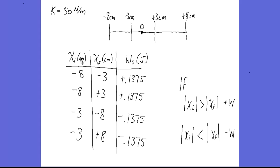The calculations confirm this rule: 3 cm is closer to equilibrium than 8 cm, so we have positive work; and 8 cm is further away than 3 cm, so we have negative work.